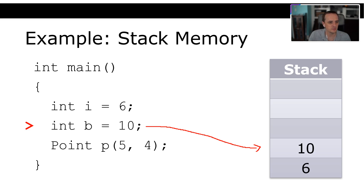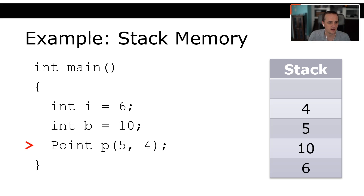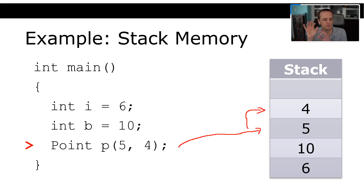Next we allocate a custom data structure, a `Point`, on the stack. A `Point` consists of two integers, x and y. When it gets allocated, the 5 goes on first and the 4 goes on next — though the stack stores a little more information about the class type. Essentially this data goes onto the stack in that order.